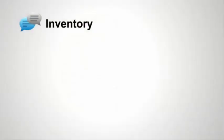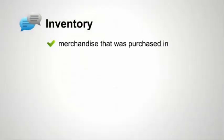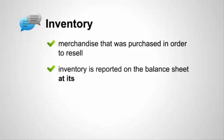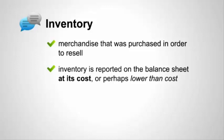The next line on the balance sheet is inventory — the merchandise we bought and plan to resell. Inventory is shown at its cost, not at what it's going to sell for. We might actually reduce the amount to something lower than cost.